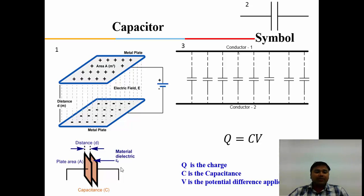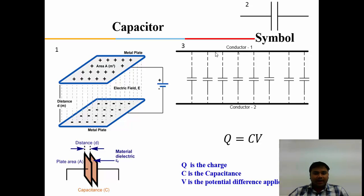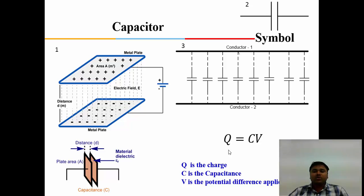Permittivity is defined as the ability of the material to allow an electric field through it. In magnetic fields you encounter mu, which is the ability of the medium to allow magnetic lines of force through it, called permeability. In a transmission line, two conductors separated by air form a capacitance throughout the length of the line, which will be uniform if the conductors are separated by the same distance throughout. The basic formula is Q = CV, where Q is charge, C is capacitance, and V is the potential difference.